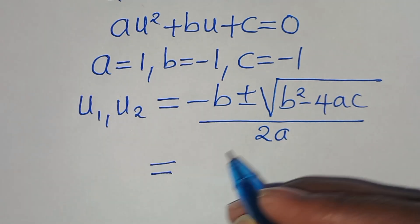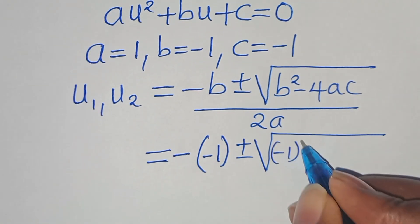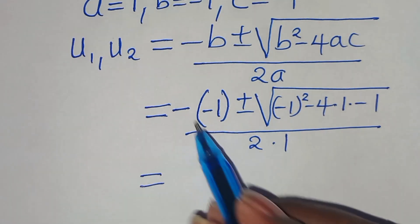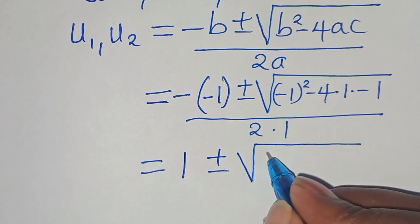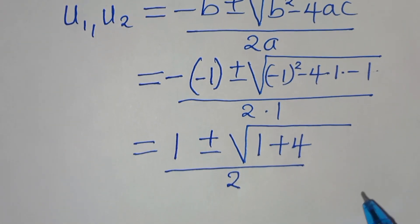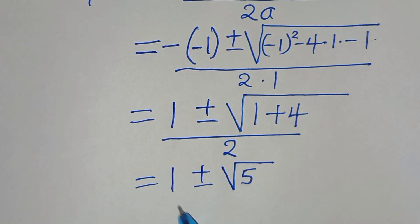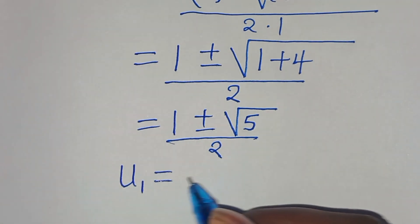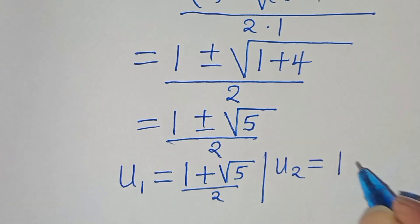Substituting the values: negative of (negative 1), plus or minus the square root of (negative 1) squared minus 4 times 1 times (negative 1), divided by 2 times 1. This gives 1 plus or minus the square root of 1 plus 4, divided by 2. So we have two values: u₁ equals (1 plus square root of 5) divided by 2, and u₂ equals (1 minus square root of 5) divided by 2.